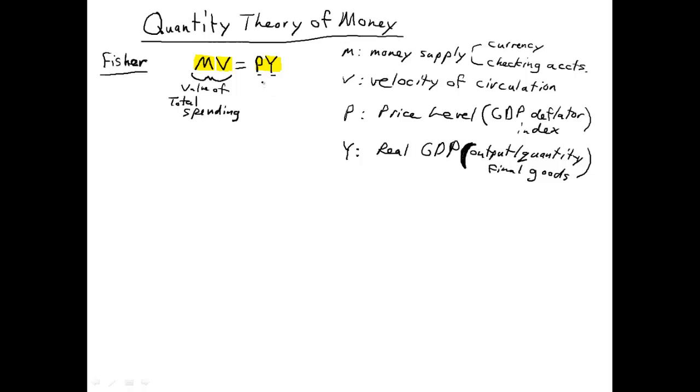You can think of M times V as the value of total spending in the economy. And you can think of P times Y as the value of sales of final goods. Total spending is spent on final goods.